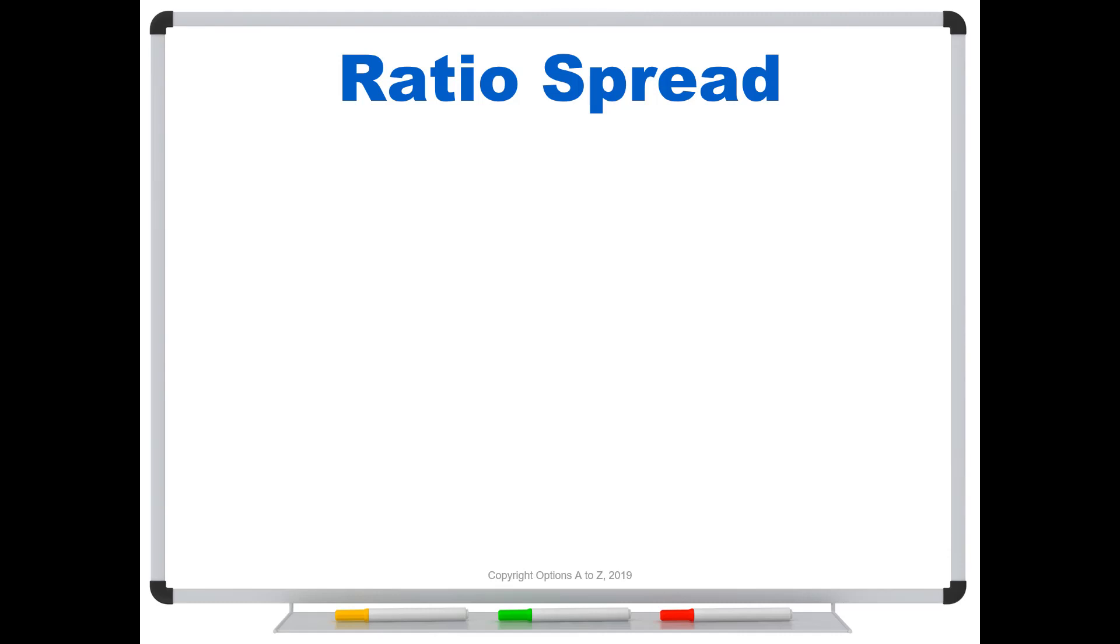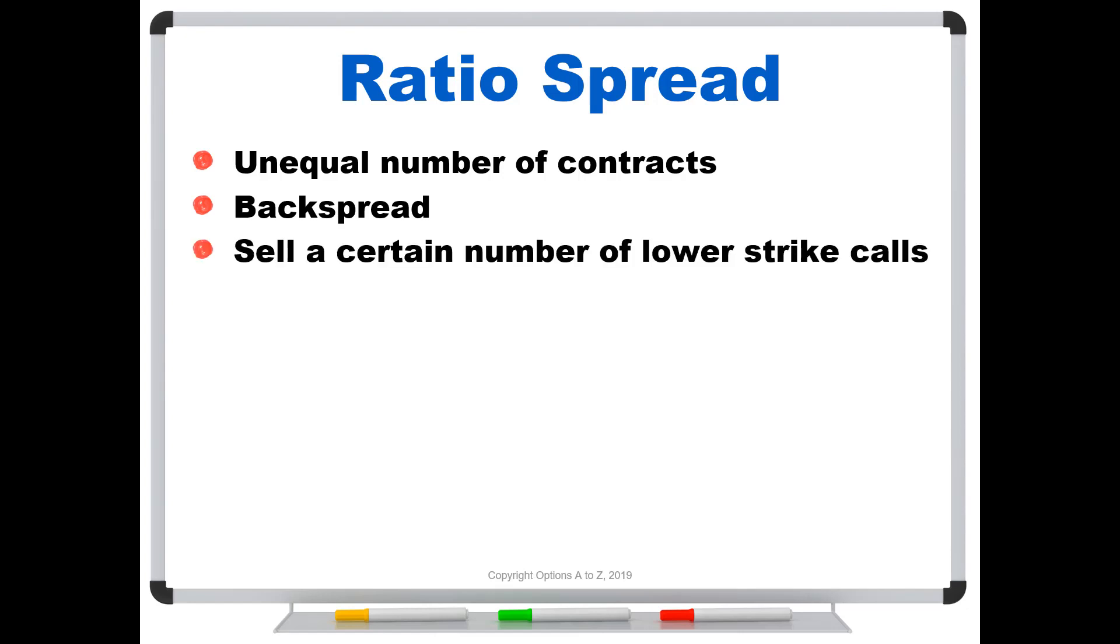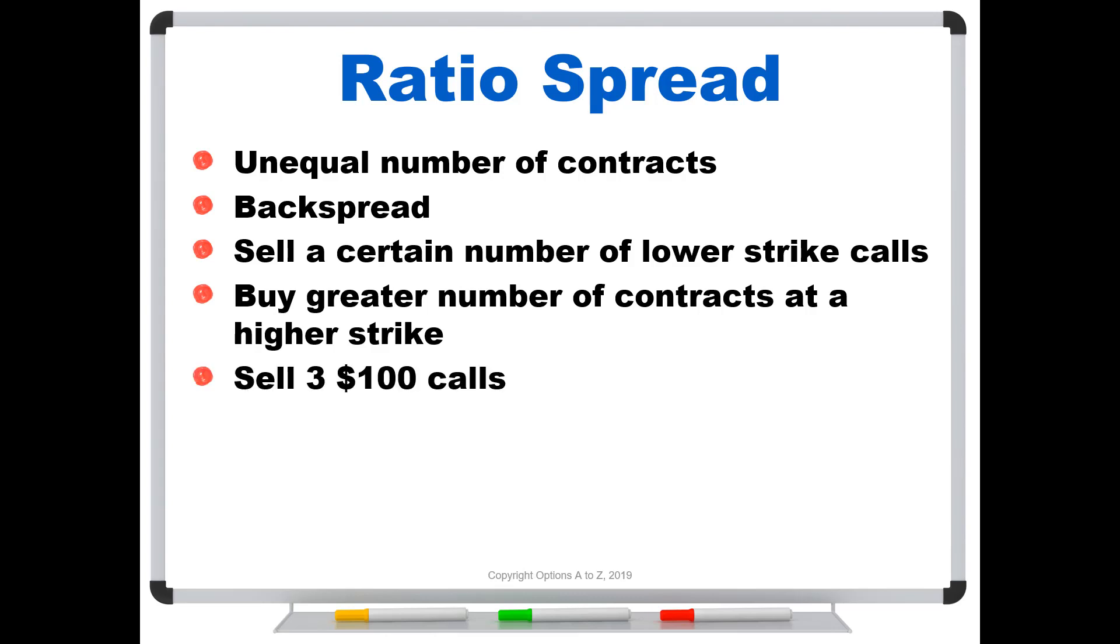Well, this becomes particularly important when you're dealing with ratio spreads. And there's a lot of different ways we can get various ratios, but it's anytime you have an unequal number of contracts. And the strategy that this person was speaking of in particular is called a backspread. And a backspread is where you're going to sell a certain number of lower strike calls. That's what he was looking at. But you'll buy a greater number of contracts at a higher strike. So for instance, let's say you're going to sell three $100 calls, but you're going to buy five 105 calls. Notice how we're not dealing in a one-to-one ratio. I'm not selling one call and buying one or selling two and buying two. They're unequal. They're in what's called a ratio spread. And let's also say that we got this done or executed for a net credit of $3.